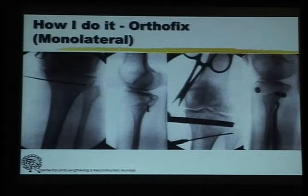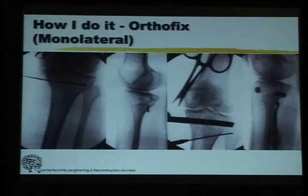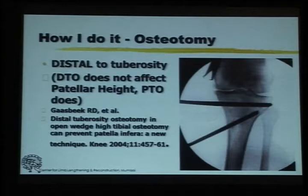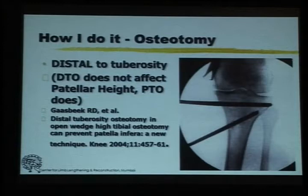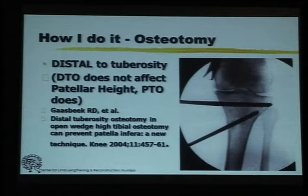I use an Orthofix-type fixator, locally manufactured. We put two pins into the proximal region of the tibia in a transverse orientation and two pins distally, then do the osteotomy through a one-centimeter incision. What is different about this osteotomy is that it is distal to the tuberosity. This is especially important in patients who have a lot of metaphyseal varus, where the deformity can be quite significant. An osteotomy proximal to the tuberosity tends to increase patellofemoral pressure and change patellar height, whereas a distal osteotomy does not.